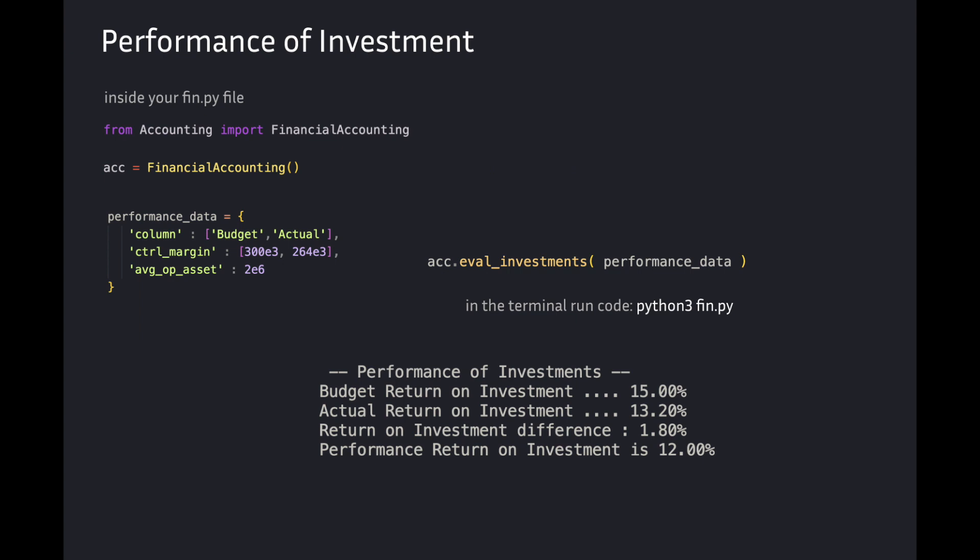Inside our fin.py file, we call our method and pass in the performance data. We get the output for our investments. Budget return on investment is 15%. The actual return on investment is 13.2%. Return on investment is 1.8%. Performance return on investment is 12%. And that concludes this video.